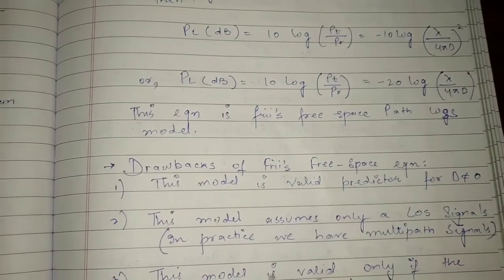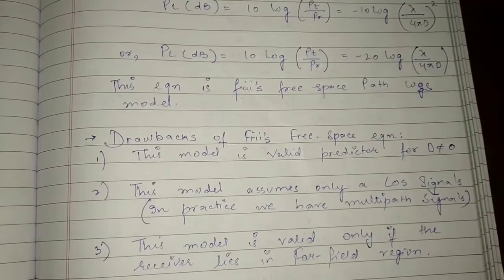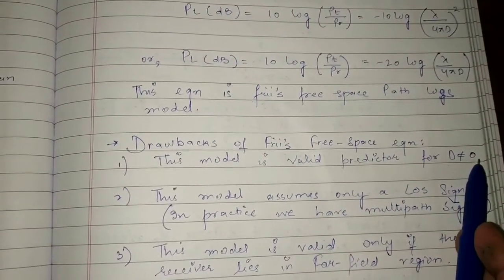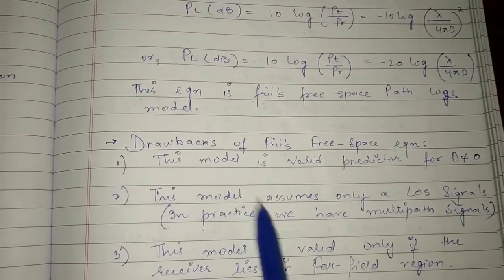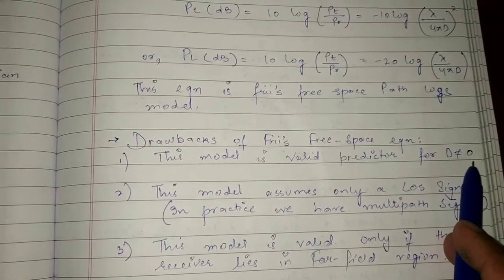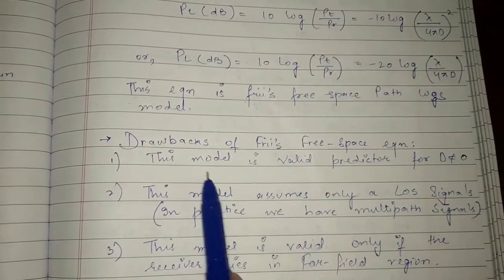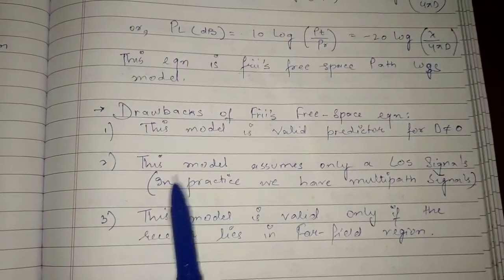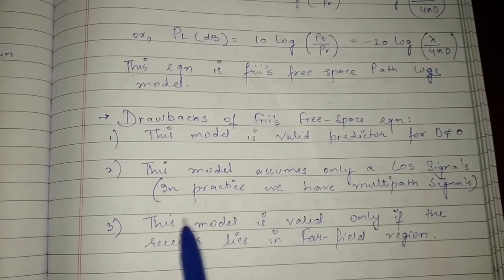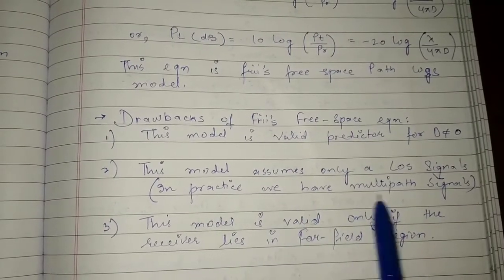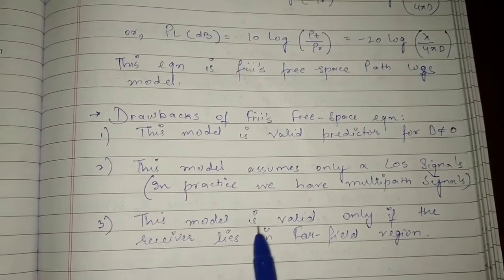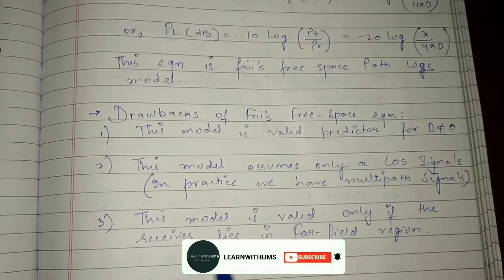Now we have some drawbacks of the Friis free space equation. First, this model is valid only when D is not equal to zero — if D equals zero the equation is not valid. Second, this model assumes only line-of-sight signals, but in practice we have multipath signals.